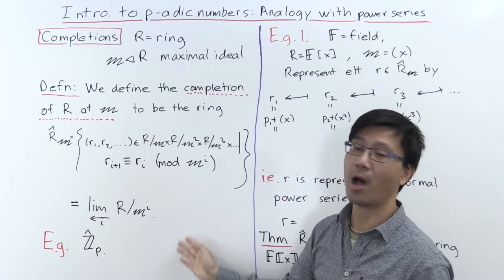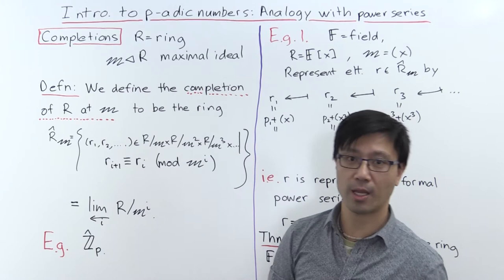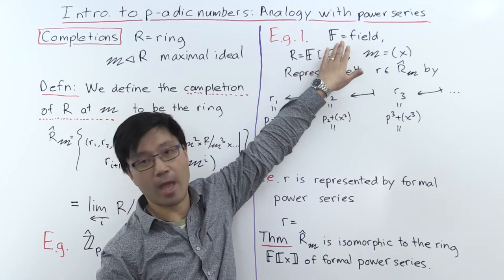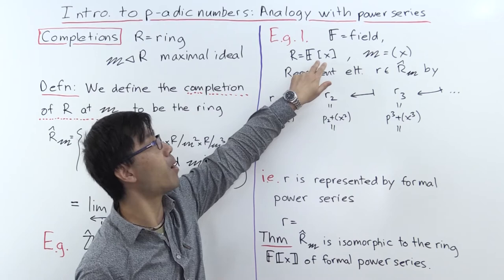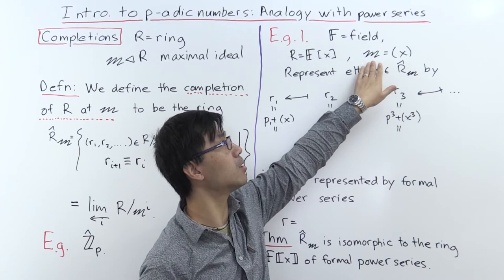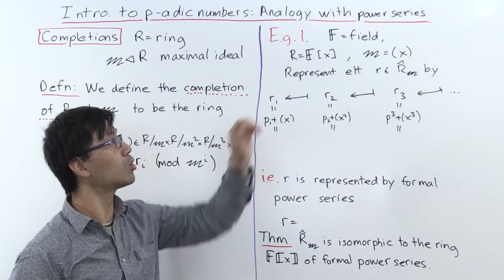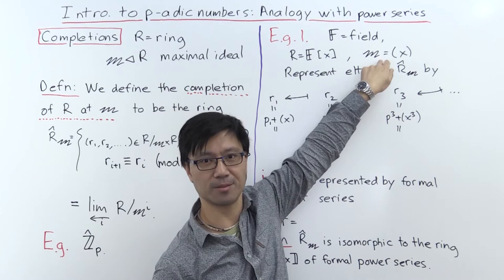Sometimes you want a simpler way of understanding such infinite tuples, and that's where power series come in. The easiest example is to consider a field F, and the ring of polynomials in one variable x. We'll pick for our maximal ideal the principal ideal generated by x, and consider the completion of this polynomial ring at this maximal ideal.